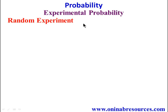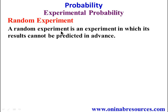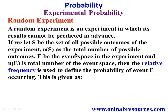So first, we look at random experiments. A random experiment is an experiment in which its results cannot be predicted in advance. If we let S be the set of all possible outcomes of the experiment, N of S as the total number of possible outcomes, E be the event space in the experiment, and N of E is the total number of the event space, then the relative frequency, that is N of E over N of S, is used to define the probability of event E occurring.